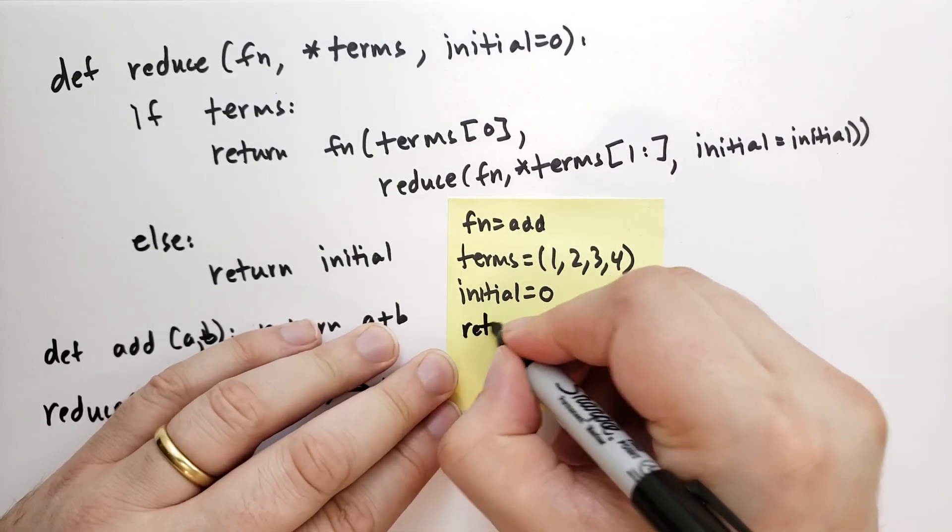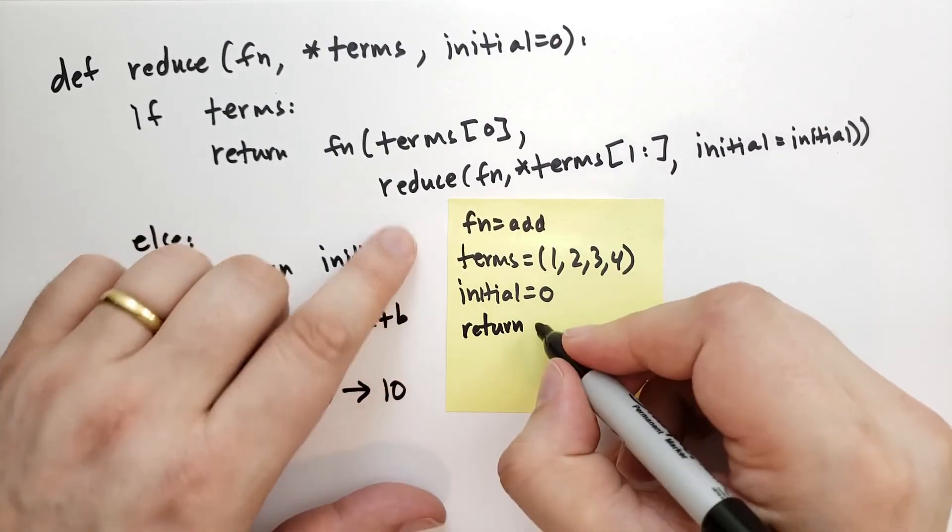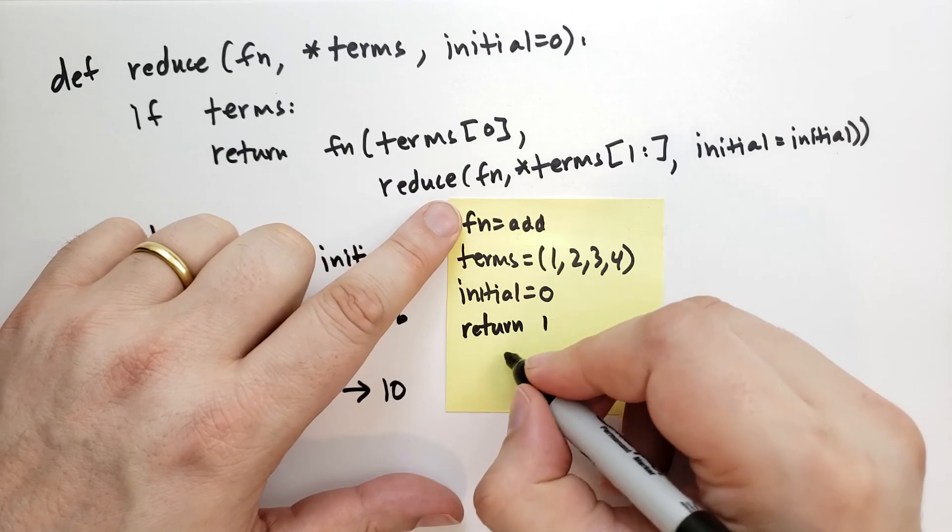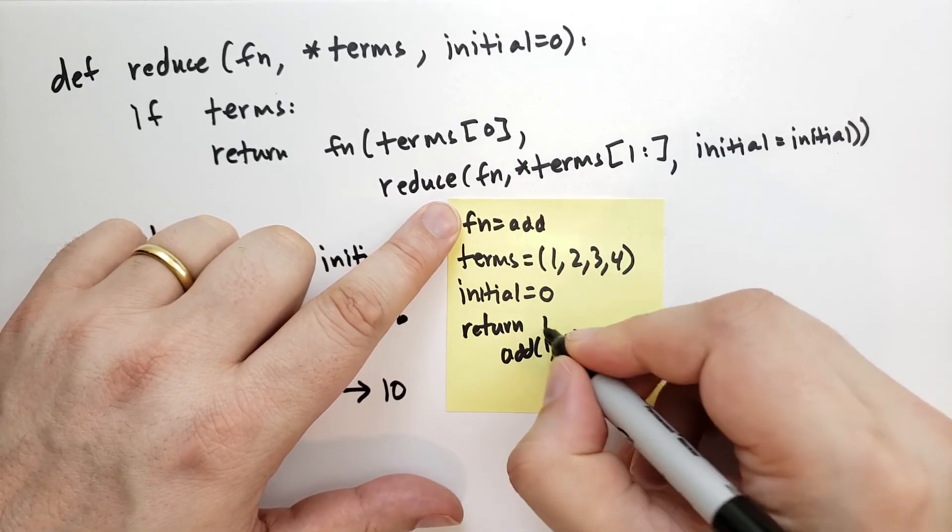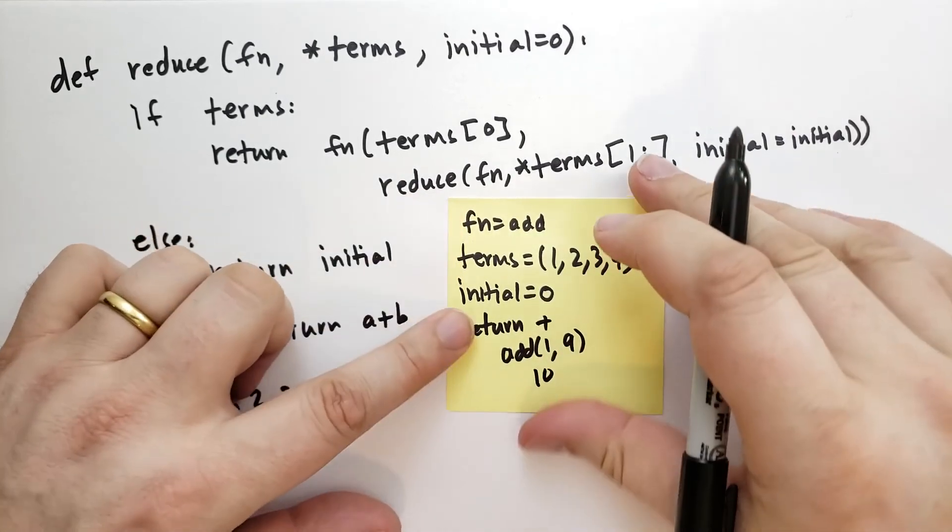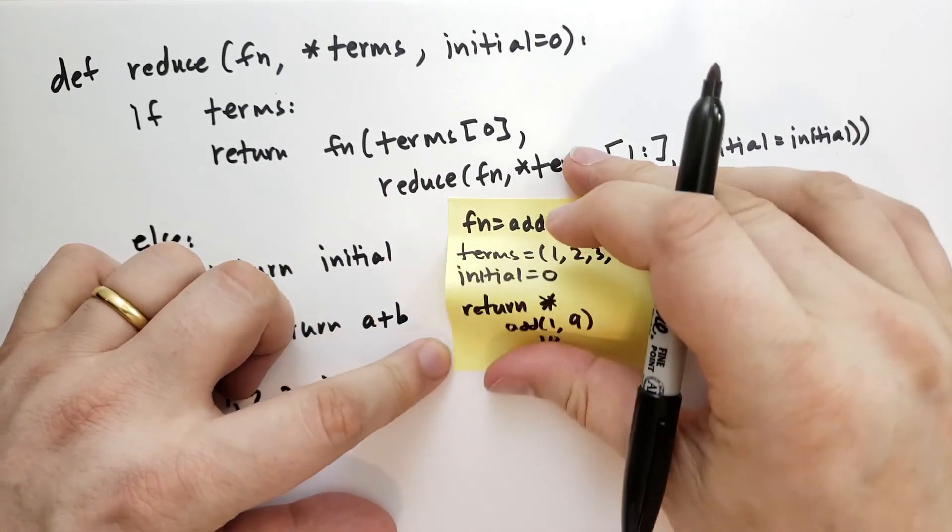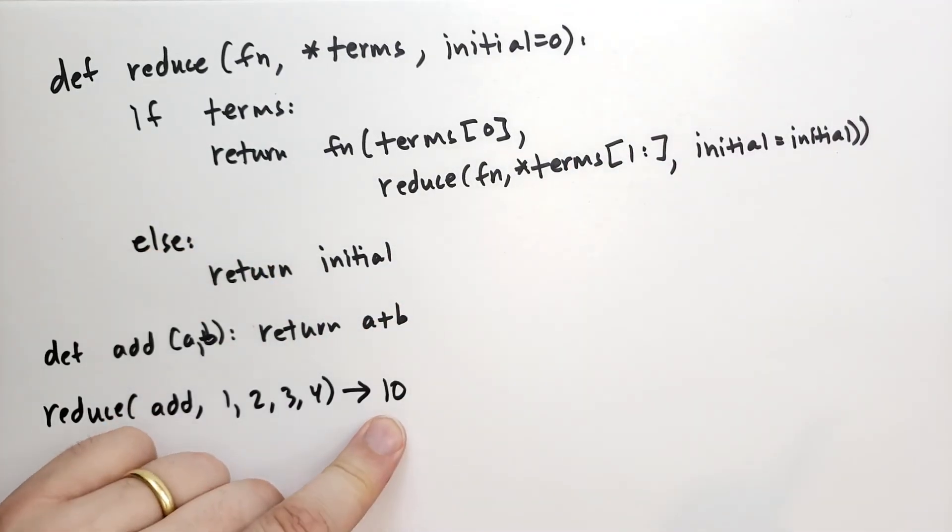And then this is going to return the first term, which is 1. So we're going to add 1, 9 was the return value. And so that returns 10. I'm trying to cross that off, not make it a plus. And so indeed, the result is 10.